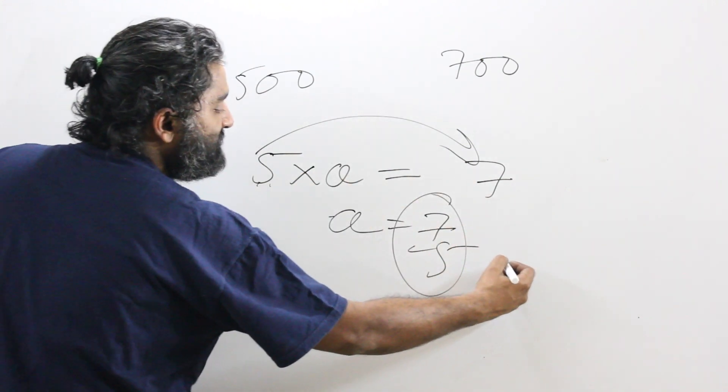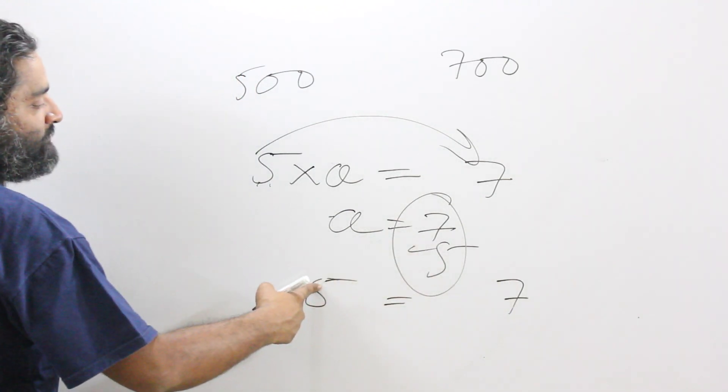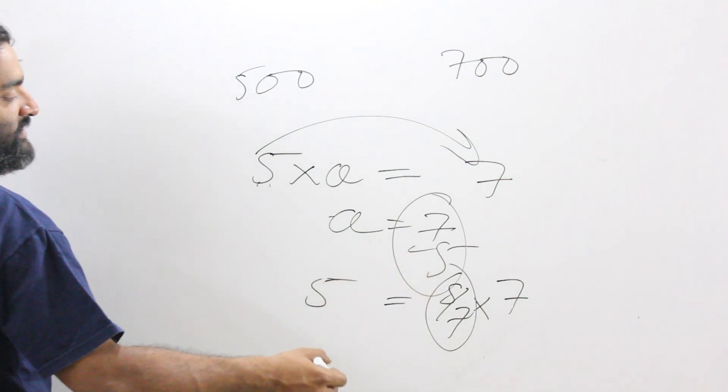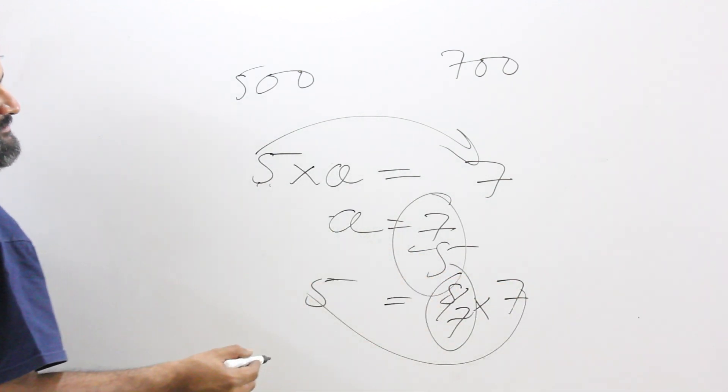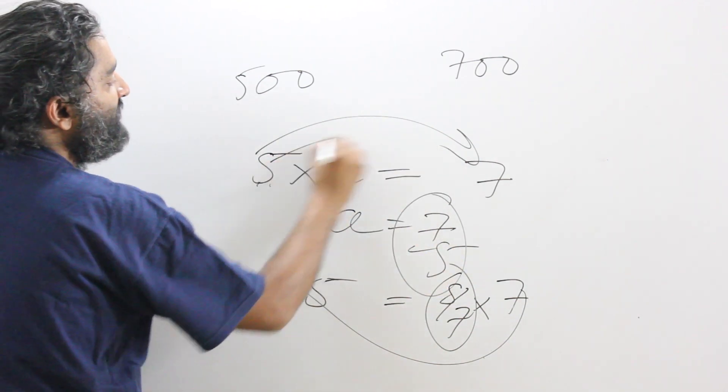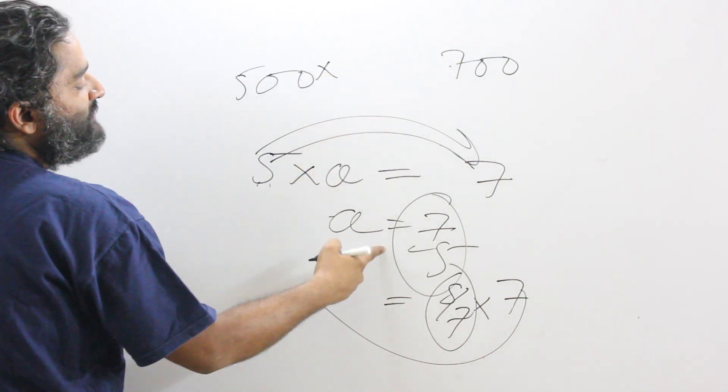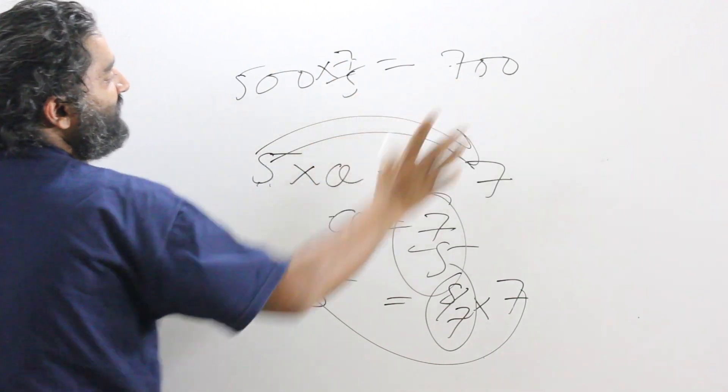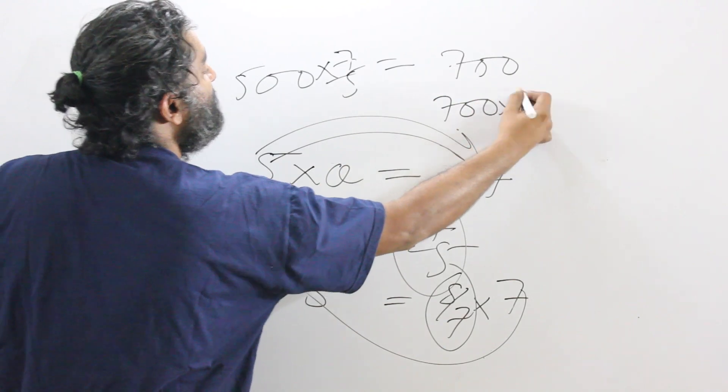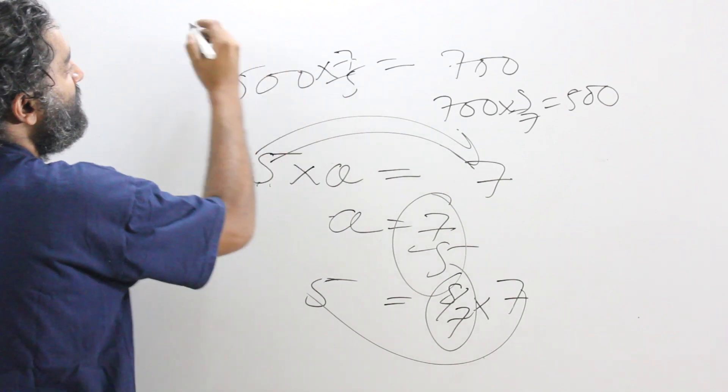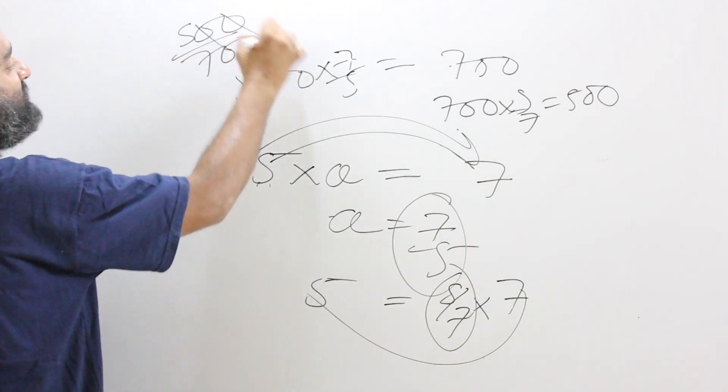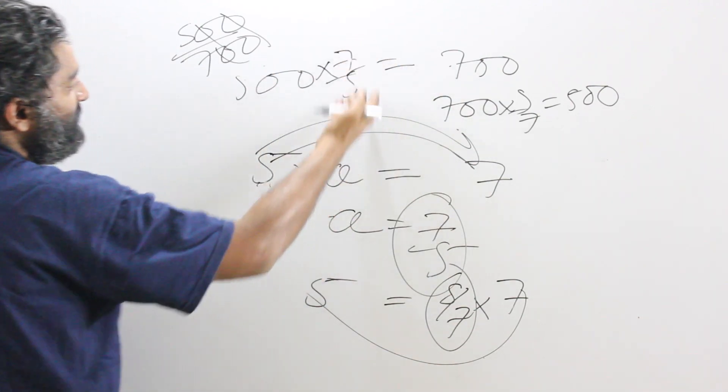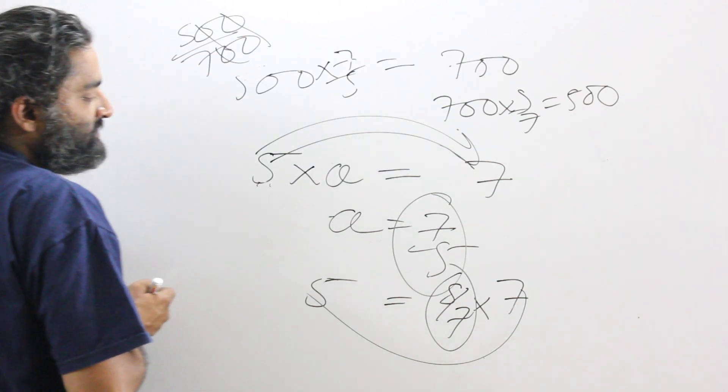Similarly, if I want to go from 7 to 5, what should I multiply 7 so that I can jump back to 5? You will get 5 by 7. What you will see is that what is true for 5 and 7 is also true for 500 and 700. If I multiply 500 by 7 by 5, I will get to 700. And similarly, if I multiply 700 by 5 by 7, I will get to 500. That is what we mean by ratio. They have the same relationship.